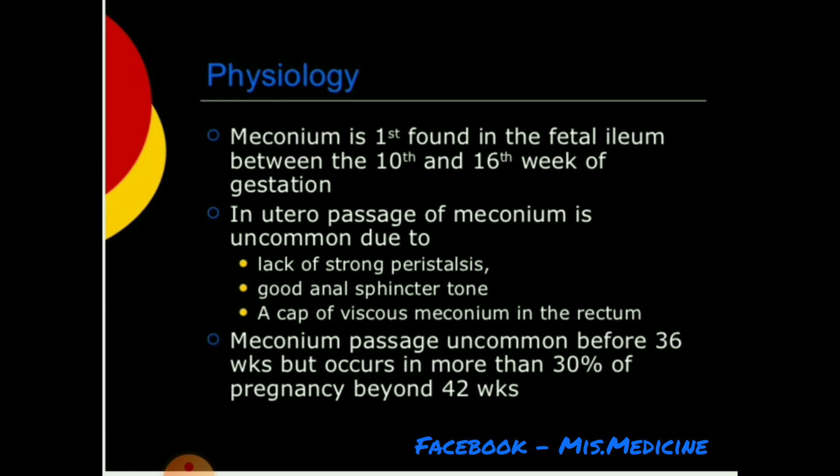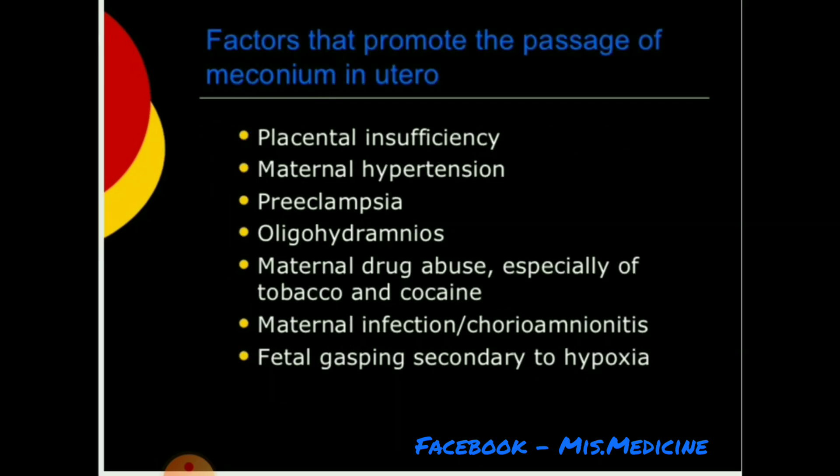In utero passage of meconium is uncommon due to lack of strong peristalsis, good anal sphincter tone, and a cap of viscous meconium in the rectum. Meconium passage is uncommon before 36 weeks but occurs in more than 30% of pregnancies beyond 42 weeks.